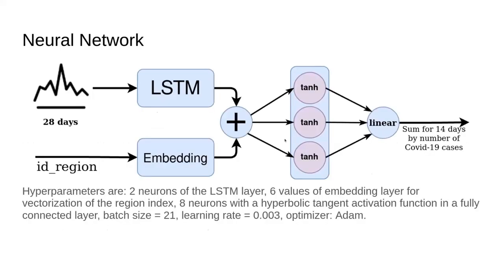The neural network that we use looks like this. It takes as input all samples from the training part, split with a moving window of 28 days in and 14 days out. It uses all examples from all regions. It also uses a region ID, vectorizes it, and concatenates this with the LSTM output. After that, it goes to a dense layer and then to the output.